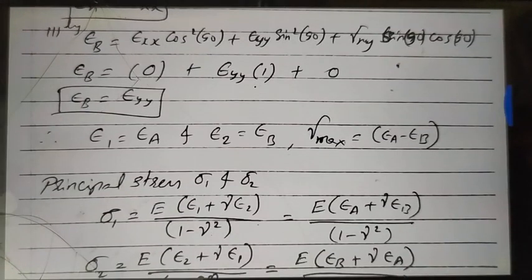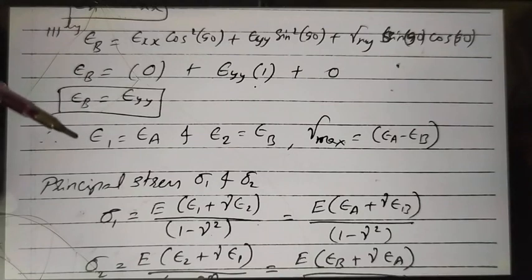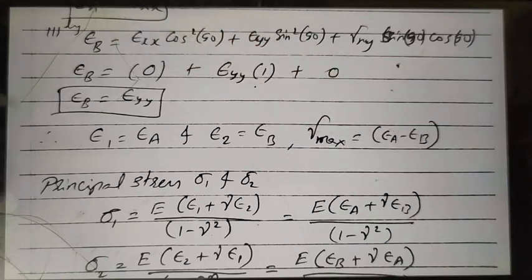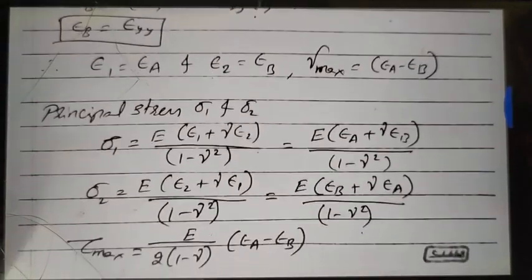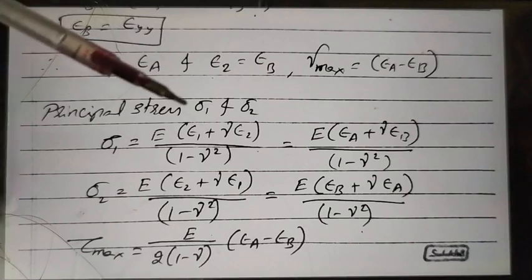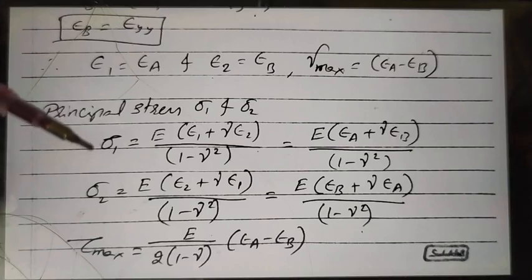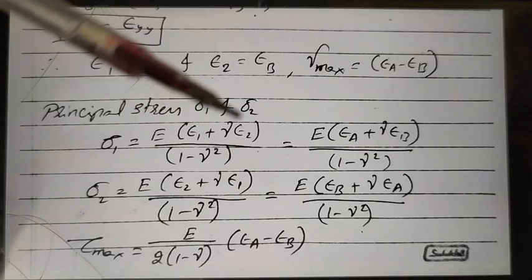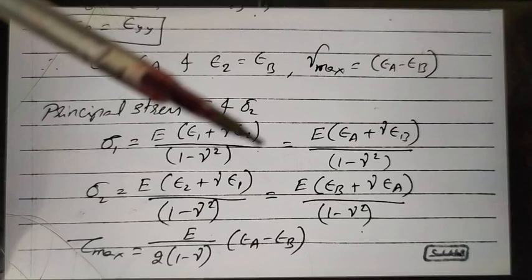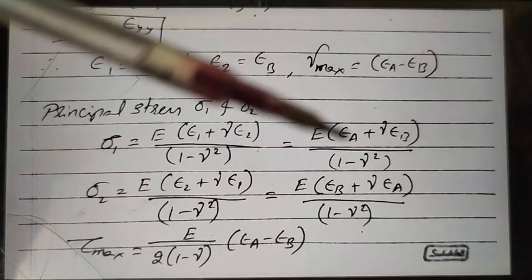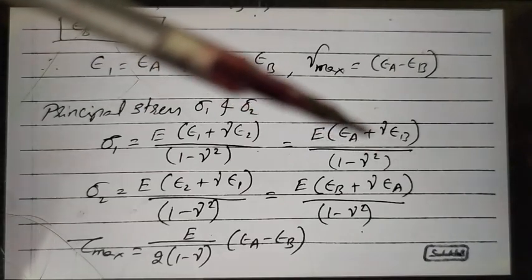Since we have only two strain values epsilon_a and epsilon_b, we can directly set them as principal strains: epsilon_1 equals epsilon_a and epsilon_2 equals epsilon_b, because we know the directions. The maximum shear strain is gamma_max equals epsilon_a minus epsilon_b, from the mechanics of materials equations.